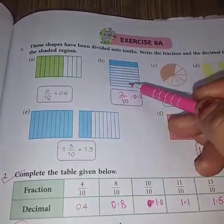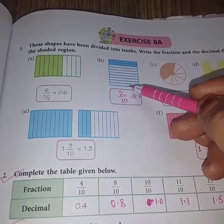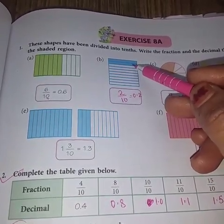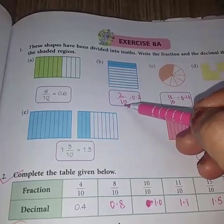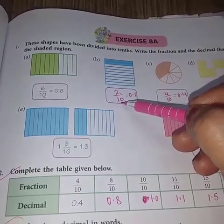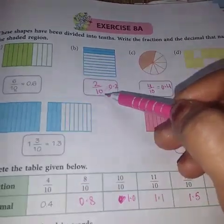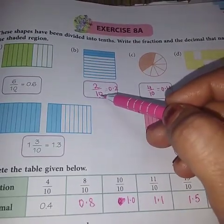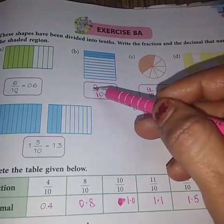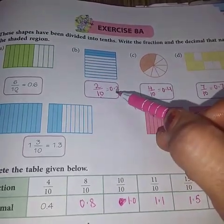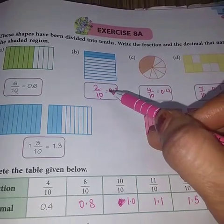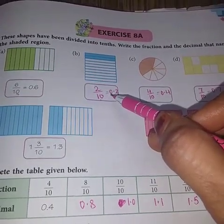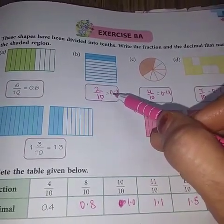Here also this is divided into 10 parts and out of 10, 2 parts are shaded. So what will be the fraction? 2 upon 10. Now this is 2 upon 10, how to write it in decimal? 1, 0 is given. So before 1 digit, we have to put the point. So it will become 0.2. Decimal se pehle 0 likhna zaroori hai.